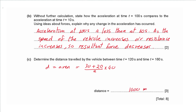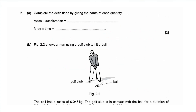Question 2a says: complete the definitions by giving the name of each quantity. Mass multiplied by acceleration is the resultant force, and force multiplied by time is impulse.